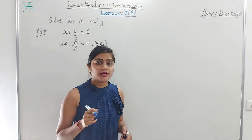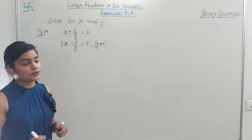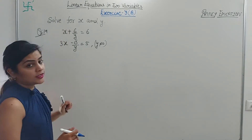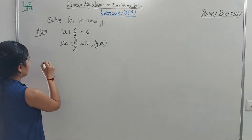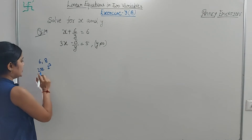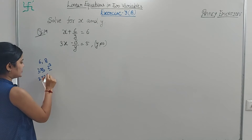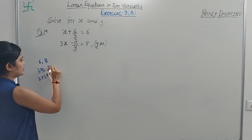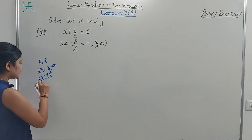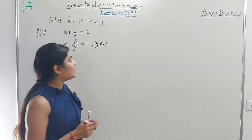Since the variable is in the denominator, we make the coefficients of 1/y equal. Here we have 6 and 8. LCM of 6 and 8: 6 = 2×3, 8 = 2³, so LCM = 24. So 6×4 = 24 — multiply equation 1 by 4; and 8×3 = 24 — multiply equation 2 by 3. To make calculation easier we use the LCM rather than multiplying by the larger values directly.